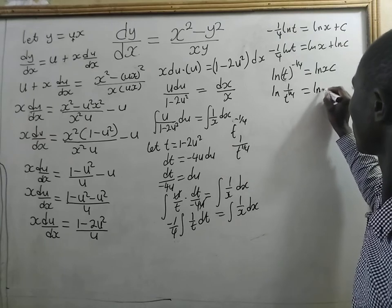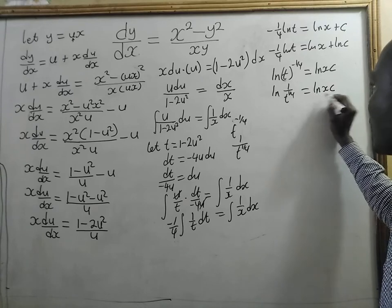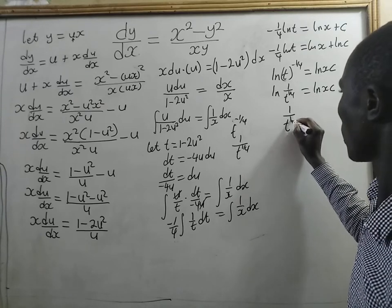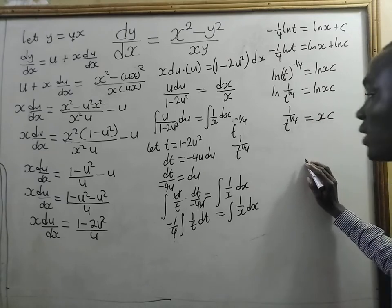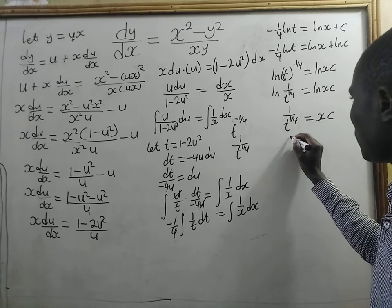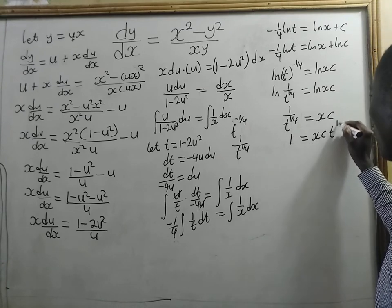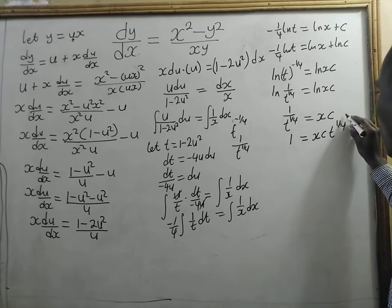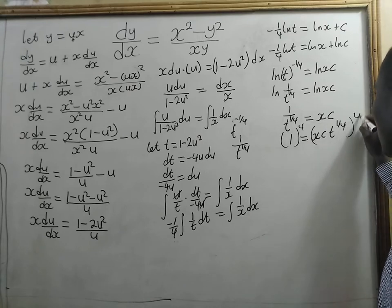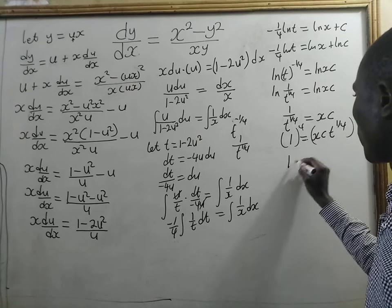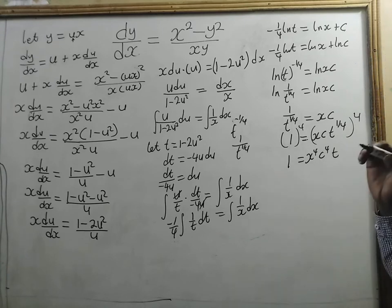Taking the antilog, we get 1 on t to the power 1 on 4 equal to xc. So 1 equals xc times t to the power 1 on 4. Taking the fourth power of each side, we get 1 equal to x to the power 4, c to the power 4, times t.